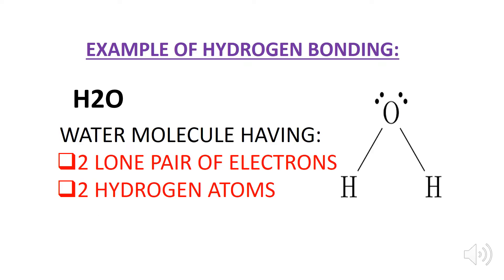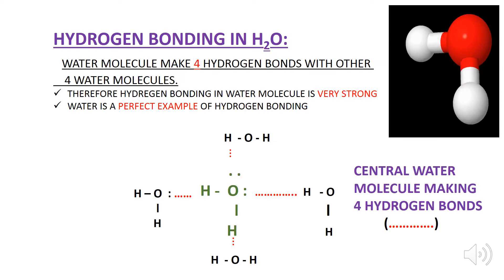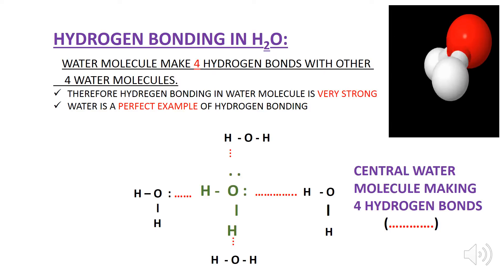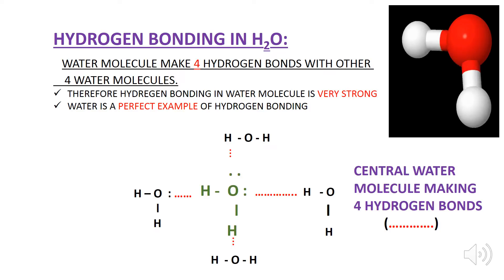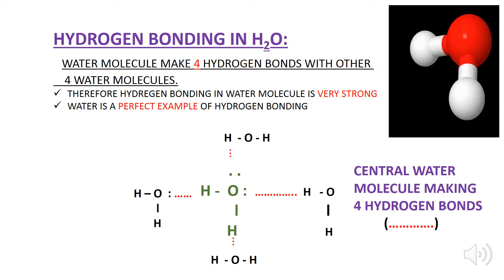Now let's discuss the hydrogen bonding in a water molecule. Look at the structure of the water molecule — it has two lone pairs and two bond pairs of electrons. A water molecule can easily make four hydrogen bonds with other four water molecules. In the diagram, the central water molecule is making four hydrogen bonds, shown by the red dotted lines.